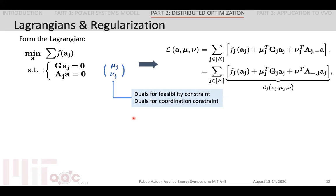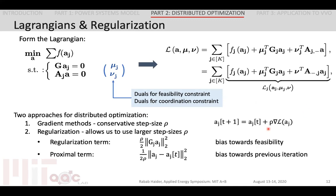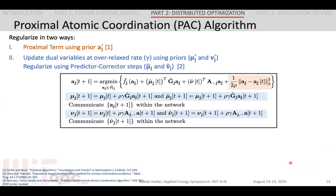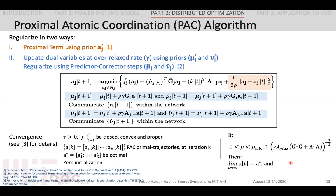To introduce the algorithm, we first form the Lagrangian by dualizing the feasibility and the coordination constraints. We can then employ gradient-based methods in order to converge to the global solution. However, gradient methods are typically slow, and we have to use very small step sizes in order for the algorithm to be stable. To use larger step sizes, we can introduce regularization or proximal terms in order to bias towards the previous solution, and this allows us to use larger step sizes. In our algorithm, we use the proximal term. We introduce the proximal atomic coordination algorithm, also called PAC, which uses the proximal term and additional regularization on the dual variables, the predictor-corrector step. We can prove the linear convergence of the algorithm for strongly convex and strongly smooth functions.